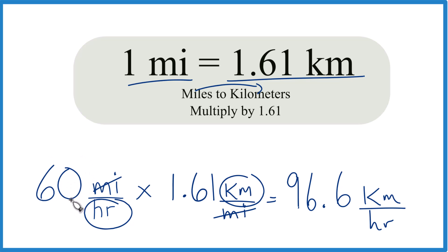So when you convert 60 miles per hour to kilometers per hour, you get 96.6 kilometers per hour.